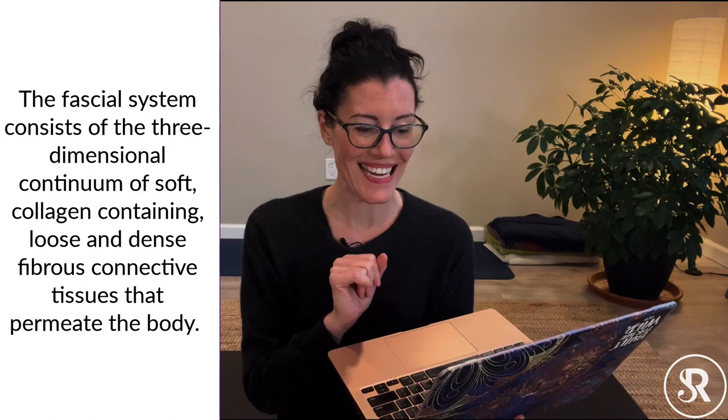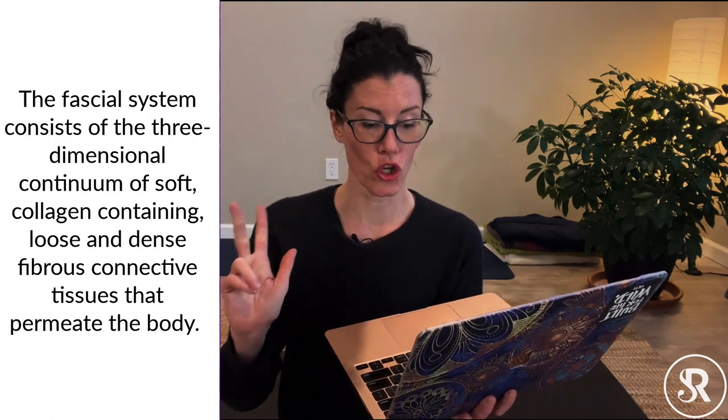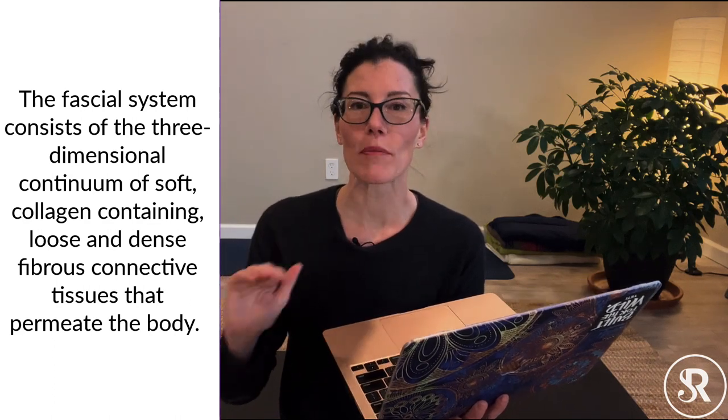Now let's look at a broader definition, because this group also defines something called the fascial system — the big family here. We have a fascia, and then we have the fascial system. The fascial system consists of the three-dimensional continuum of soft, collagen-containing, loose and dense fibrous connective tissues that permeate the body. A fascia has to be dissected into sheets, but the fascial system is the continuum of all of this collagenous material that holds us together.